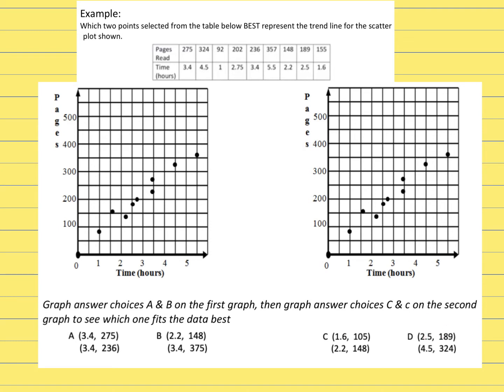A couple things that I just noticed were mistakes. If you look at answer choice B, instead of this being 375, if you come up here, 3.4, it should have matched with 275. So I'm going to scratch that out and put in 275.